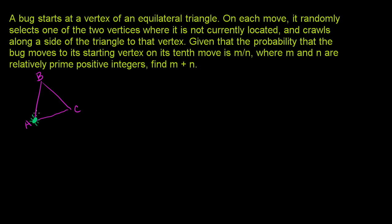On each move, the bug randomly selects one of the two vertices. So on its first move, it will either go to vertex b or vertex c. If it went to vertex c, then on its next move it'll either go to vertex b or vertex a. If it went to vertex b, on its next move it'll either go to vertex a or vertex c. We want to find the probability of it moving to vertex a on its 10th move.